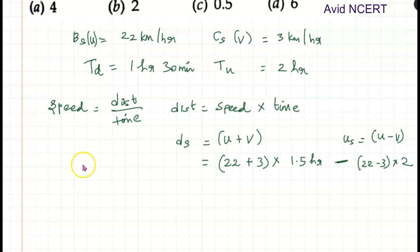So by solving this we can find the difference between the distance, which equals 22 plus 3 is 25 times 1.5 minus 22 minus 3 is 19 times 2.